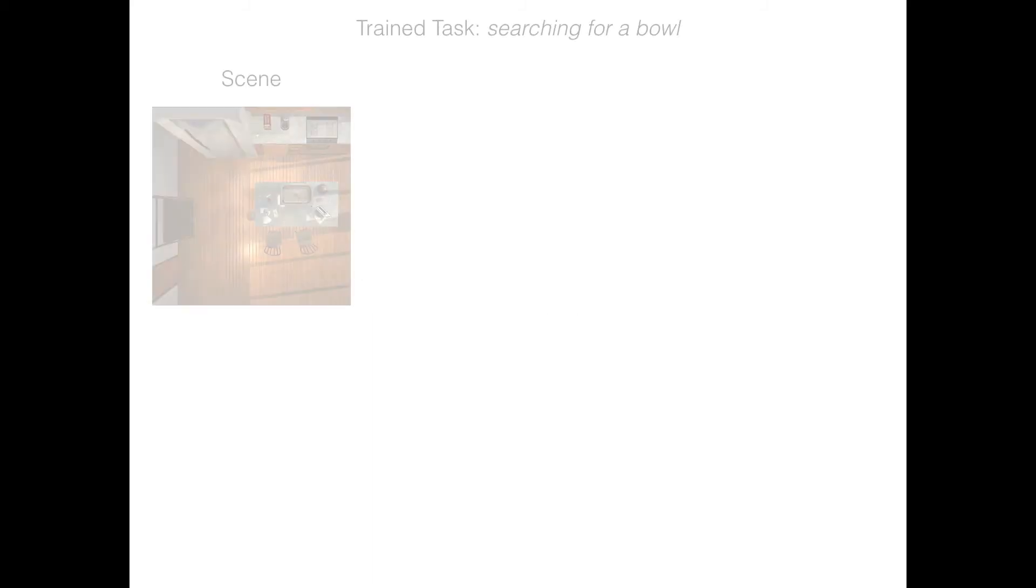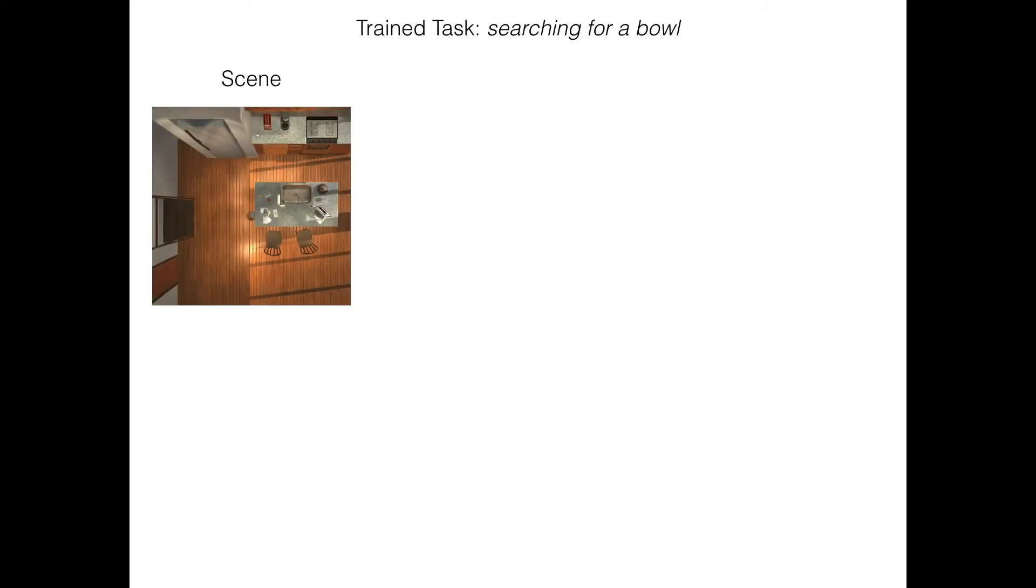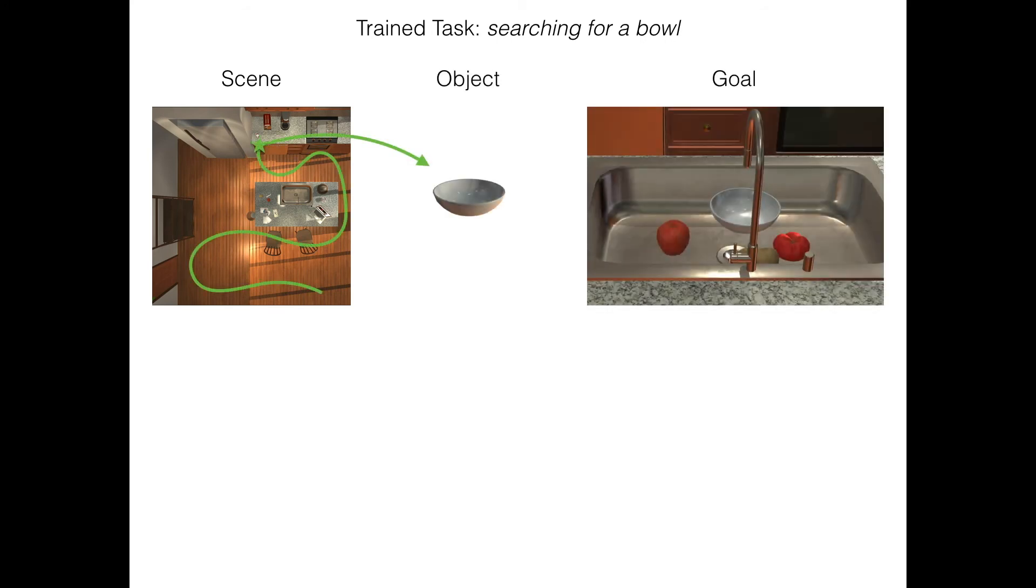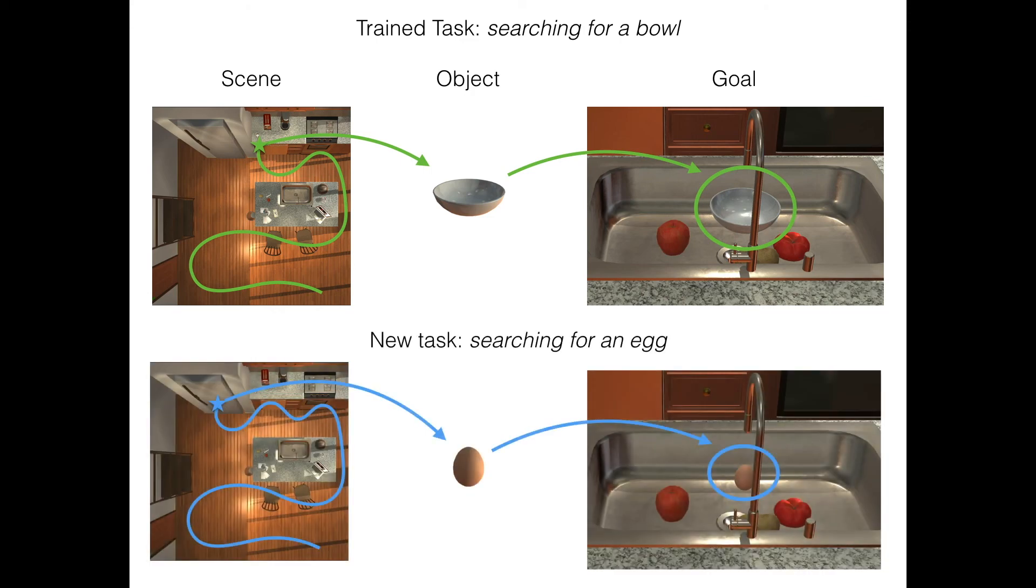Our successor representation lets us transfer to new tasks quickly by only retraining the reward predictor. Here, we provide an example of policy transfer. In the original task, we trained our model to find a bowl and put it in the sink. When transferring the policy, we retrained the model to search for an egg and put it in the sink.